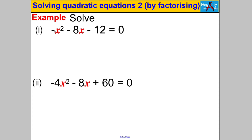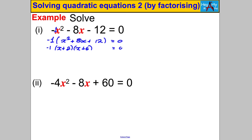Now let's look at cases with a negative coefficient of x². If you feel confident, try it yourself. Step 1: factorize out negative 1 — that makes everything much easier. You get negative 1 times (x² + 8x + 12) = 0. Factorize the quadratic: (X + 2)(X + 6) = 0. The negative 1 doesn't affect which brackets equal zero, so either X + 2 = 0 giving X = negative 2, or X + 6 = 0 giving X = negative 6.